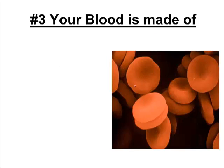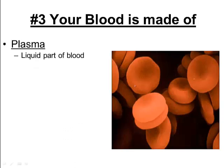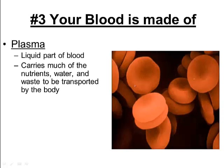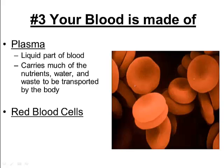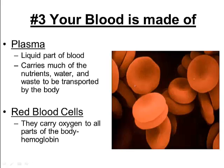The last component of the circulatory system is your blood, which has four major components. The plasma is the liquid part of the blood — mostly water — and it carries nutrients and waste that need to be transported. Red blood cells carry oxygen to all parts of the body using a special protein called hemoglobin, which works with iron to carry oxygen. That interaction is what gives your blood its red color.